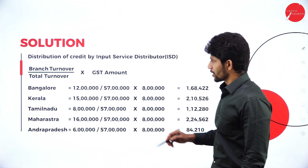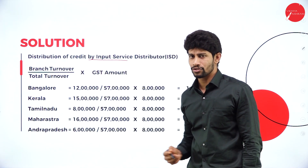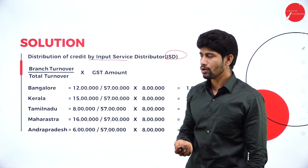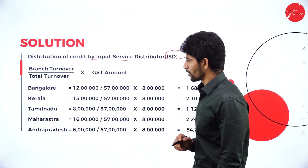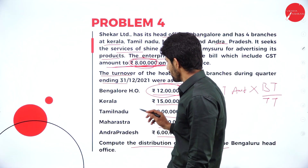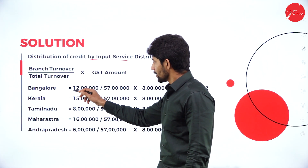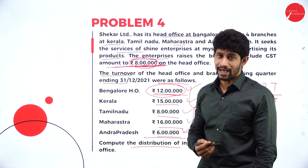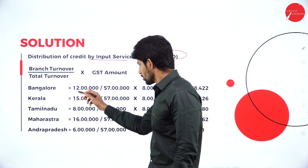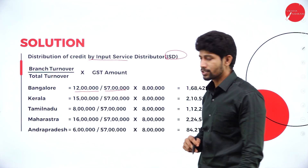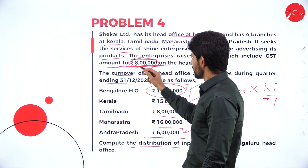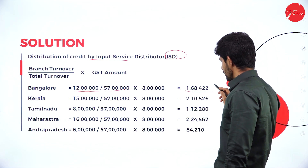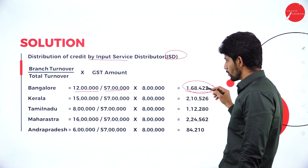Solution — distribution of credit by input service distributor (ISD). The formula is branch turnover divided by total turnover into GST amount. First, Bangalore head office: turnover is 12 lakh rupees. If you total all five branches' turnover you get 57 lakh, which is your total turnover. So Bangalore branch: 12 lakh divided by 57 lakh into GST amount of 8 lakh — you get rupees 1,68,422. Out of 8 lakh rupees, 1,68,422 is to be distributed to the Bangalore branch.